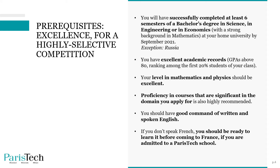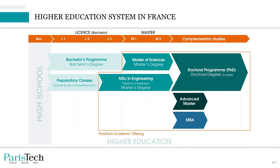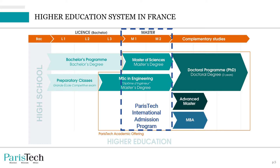If you do not speak French when you apply, you should be ready to learn it before coming to France if you are admitted to a PariTech school. The PariTech International Admission Program aims at recruiting students for the last two years of the Master of Science in Engineering — what we call in France the Diplôme d'Ingénieur. The Diplôme d'Ingénieur is usually a three-year graduate program. International students recruited through the program will directly enter the second year and after two years obtain the Diplôme d'Ingénieur.